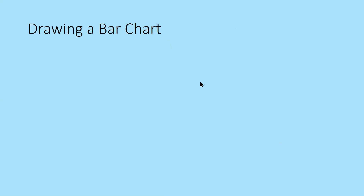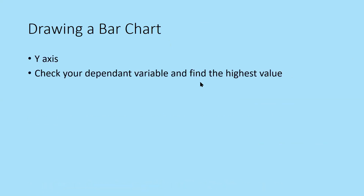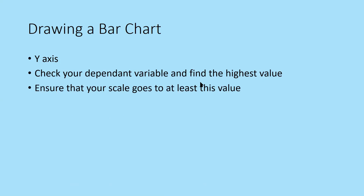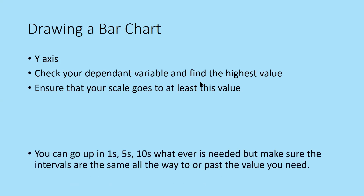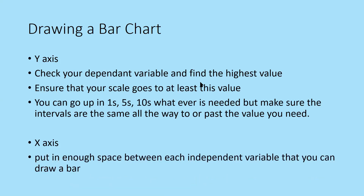Now for drawing a bar chart. Please write down these six points. Check your dependent variable and find the highest value. Ensure your scale goes up to at least that value. Your scale can go up in ones, fives, tens — whatever is needed — but make sure the intervals are equal all the way up. On the x-axis, put enough space between each independent variable to draw a bar. Keep all bars the same width and all gaps between bars the same width. Pause the video to write this down.